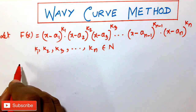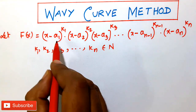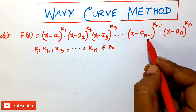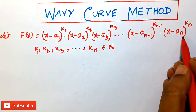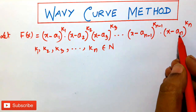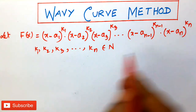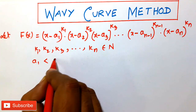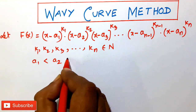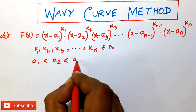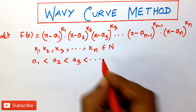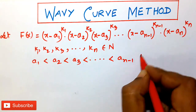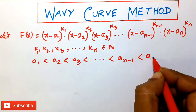And a₁, a₂, a₃, and so on up to aₙ₋₁ and aₙ are all fixed natural numbers satisfying the condition a₁ < a₂ < a₃ < ... < aₙ₋₁ < aₙ.